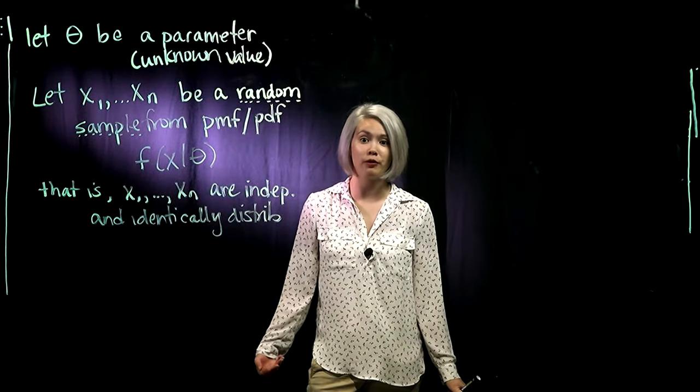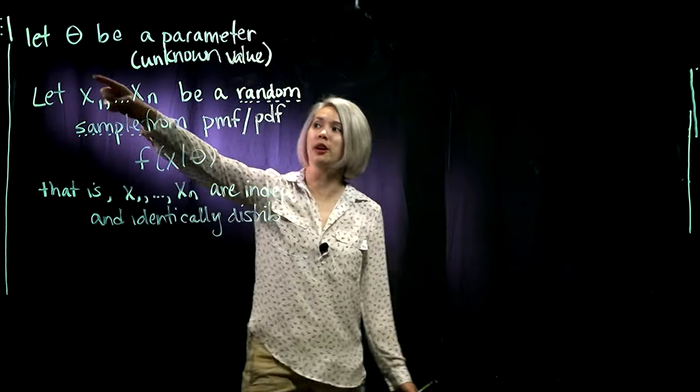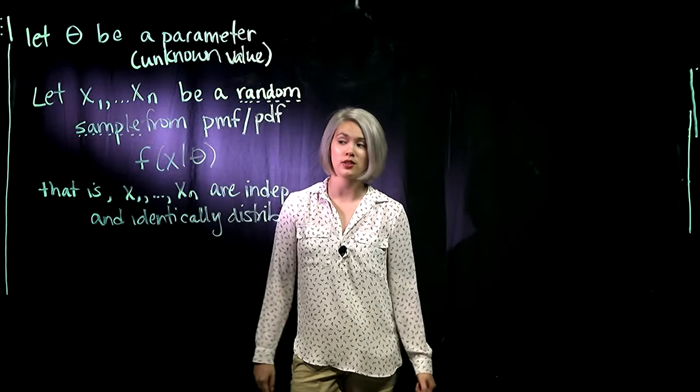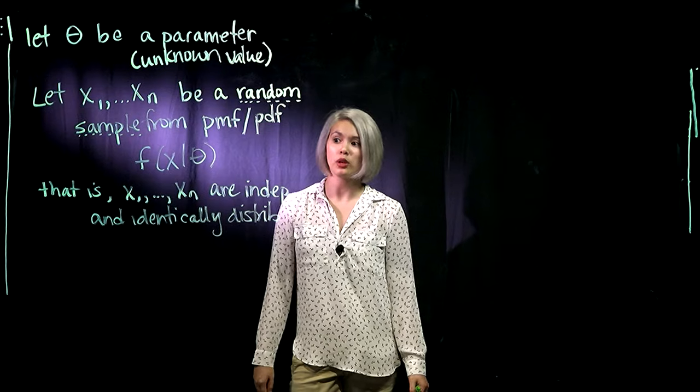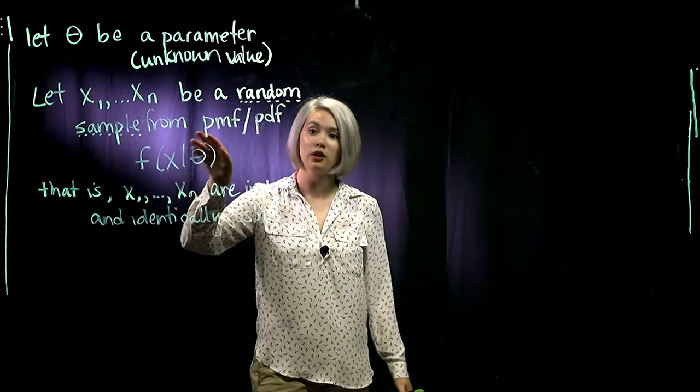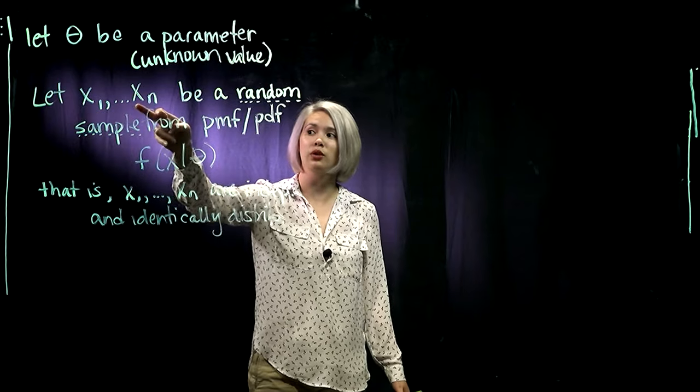To start off with maximum likelihood, we first need to think about our parameter theta. So this is a parameter that's unknown, and we're trying to figure stuff out about it. Even though theta is unknown, what we could do is go out into the world and collect some data. So we would collect x1 through xn, so n measurements.